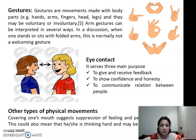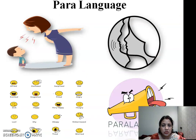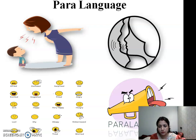Other types of physical movement include covering one's mouth, which is a suppression of feeling and perhaps uncertainty — it also means the person is thinking hard and may be unsure of what to say next. Moving to the next topic called paralanguage: paralanguage is focused not on what you say but on how you say it. It is not focused on what you are saying but on how you are saying it or how you communicate.